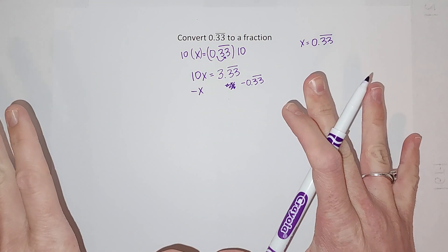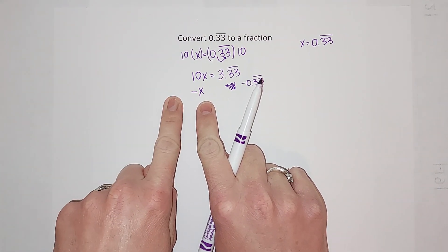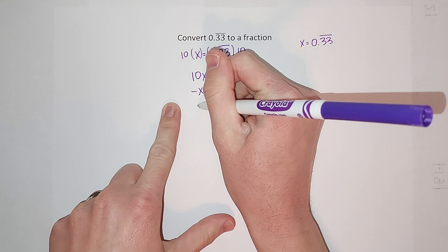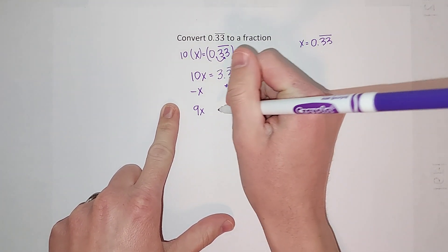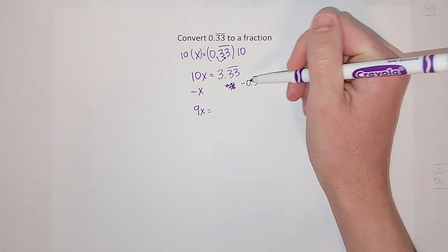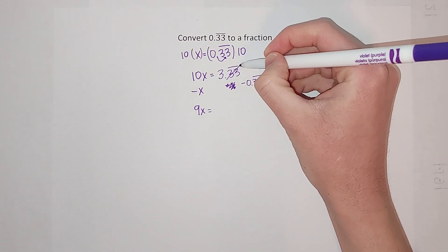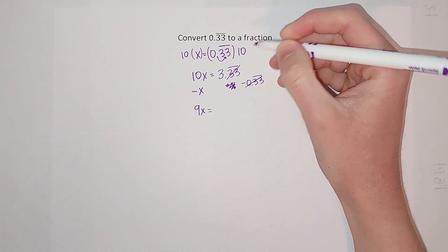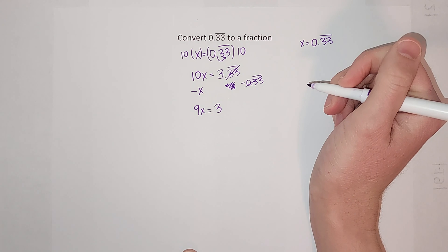You staying with me? All right. So 10x minus x is 9x, right? 10x take away 1x gives me 9x. If I subtract the 0.3 repeating from this side, that gets rid of these, and I'm just left with 3. Oh my gosh, I can do this! Right, our whole goal is to get that x alone.